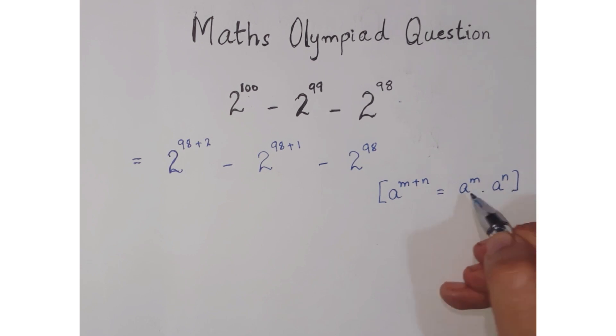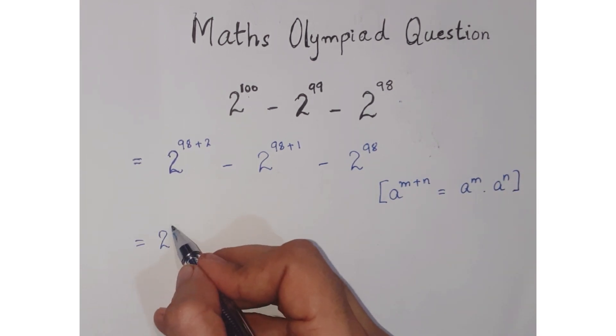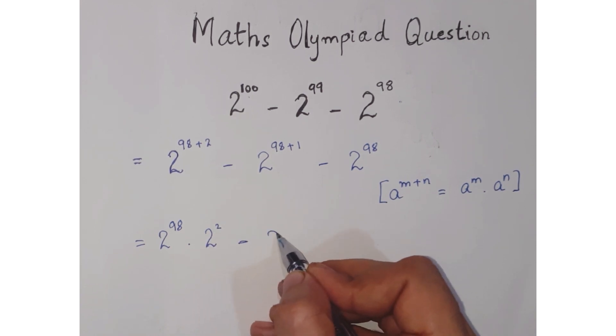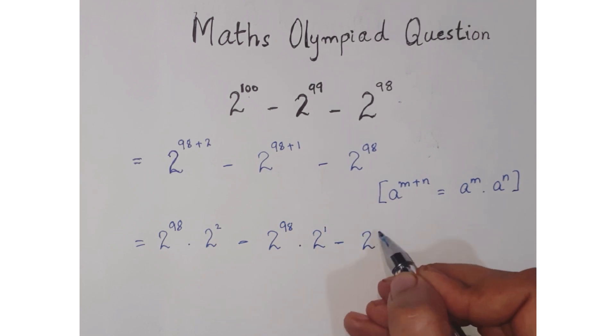So you can write this term as 2 raised to the power 98 dot 2 raised to the power 2 minus 2 raised to the power 98 dot 2 to the power 1 minus 2 raised to the power 98.